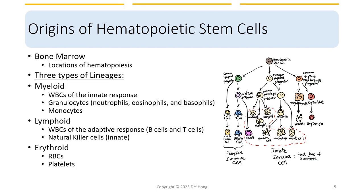The immune system is composed of all these different kinds of leukocytes. During hematopoiesis, there are three different lineages of blood cells. The first is the myeloid lineage, including white blood cells of the innate response — all the granulocytes including neutrophils, eosinophils, and basophils — as well as monocytes. The lymphoid lineage forms adaptive response white blood cells, our B cells and T cells, and also NK cells. Note that NK cells are still considered part of the innate response. The erythroid lineage forms red blood cells and platelets.